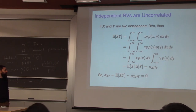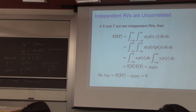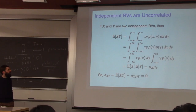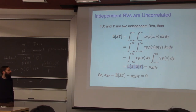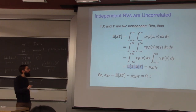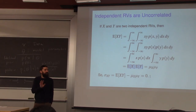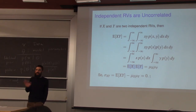Finally — and this is very important to remember — if two random variables X and Y are independent, then E[XY] equals E[X]·E[Y], which means their covariance is zero. So independent variables always have zero covariance.